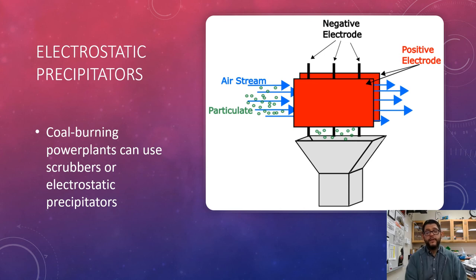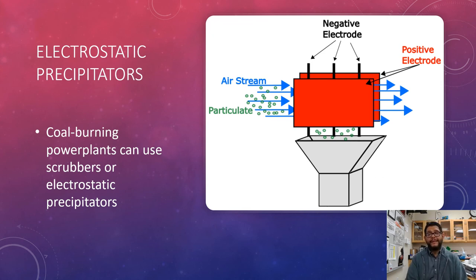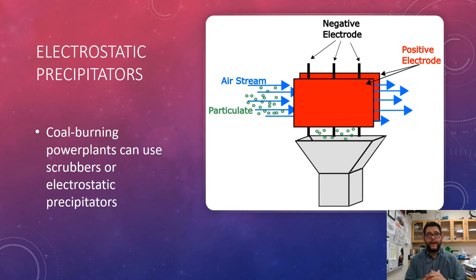Another good method is the electrostatic precipitator, used in coal-burning power plants. You basically electrically charge the particles in the air using a negative electrode, then attach a positive electrode. Once those particles are charged, the positive and negative attach to each other and you've gotten rid of that pollution. The downside is these can be expensive methods.